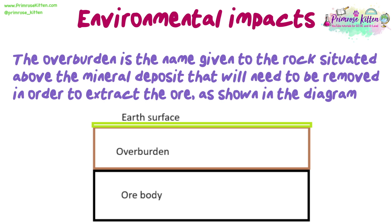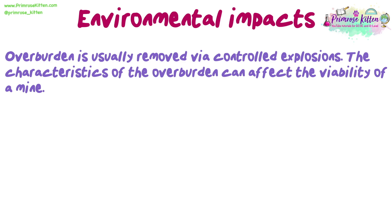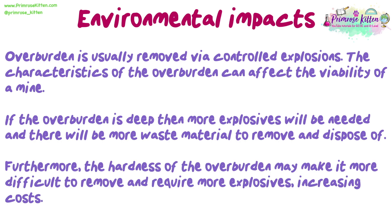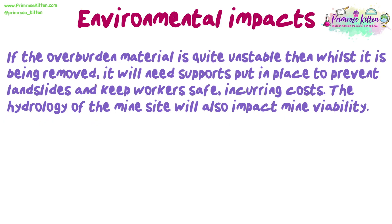The overburden is the name given to the rock situated above the mineral deposit that will need to be removed in order to extract the ore, as shown in this diagram. Overburden is usually removed via controlled explosions. The characteristics of the overburden can affect the viability of a mine. If the overburden is deep, then more explosives will be needed and there will be more waste material to remove and dispose of. Furthermore, the hardness of the overburden may make it more difficult to remove and require more explosives, increasing costs. If the overburden material is quite unstable, then whilst it is being removed, it will need supports put in place to prevent landslides and keep workers safe, again incurring costs.